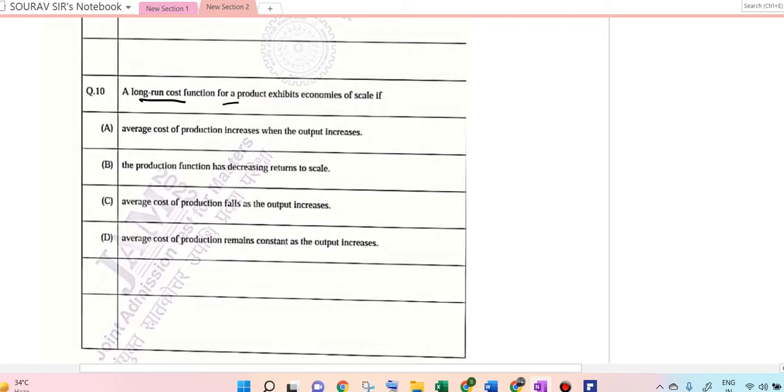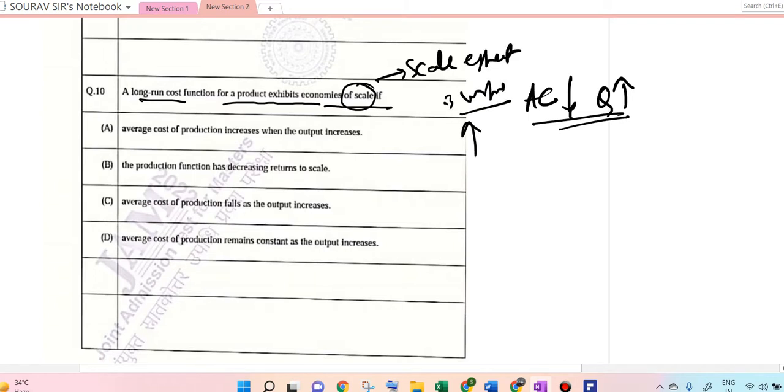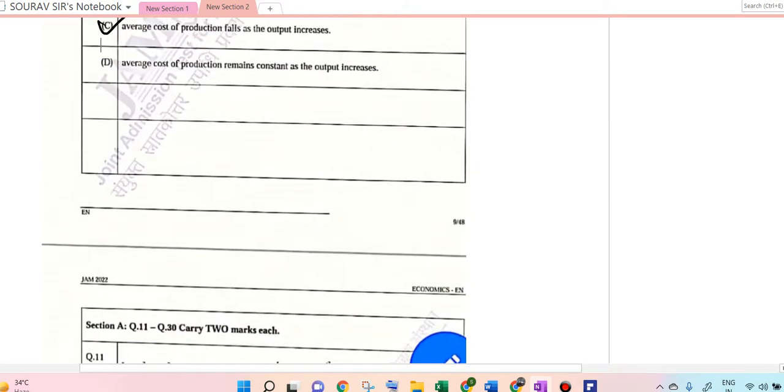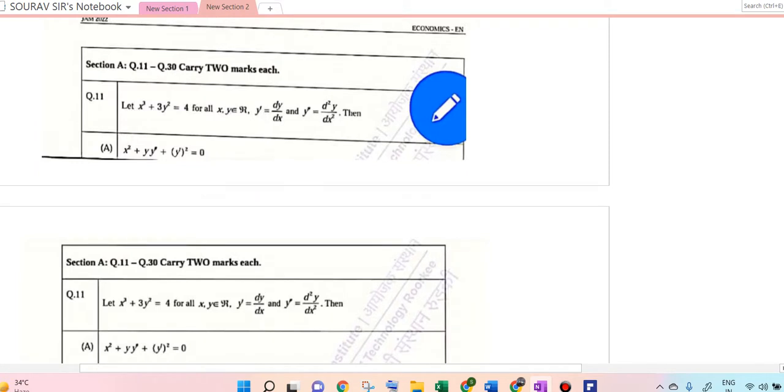A long-run cost function for the product exhibits economies of scale only under what? Remember the economies of scale: if the average cost of production falls, AC falls as Q increases. So more and more production and they can enjoy the economies of scale. The scale effect is only useful with respect to a larger amount. Obviously here, 10 C is the correct answer.